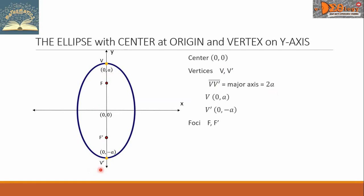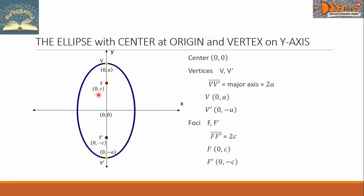Next are the foci, denoted by f and f' respectively. The line segment connecting the foci is assigned to be 2c. So the coordinates of the foci are (0, c) and (0, -c) respectively.